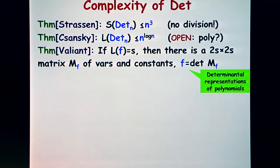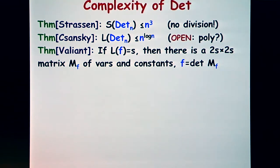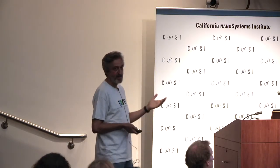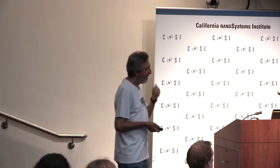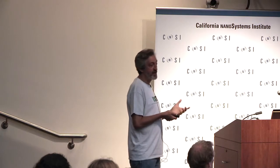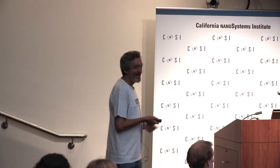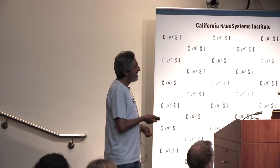People study determinantal representations of polynomials in commutative algebra, and this result is why such representations always exist. More precisely, if you have a formula of size S for some polynomial, then there is a 2S by 2S matrix of variables and constants whose determinant is that polynomial. Let me give you the proof — just a couple of minutes, but it's really beautiful. It requires one key idea, and once you have that idea, you realize it was easy.